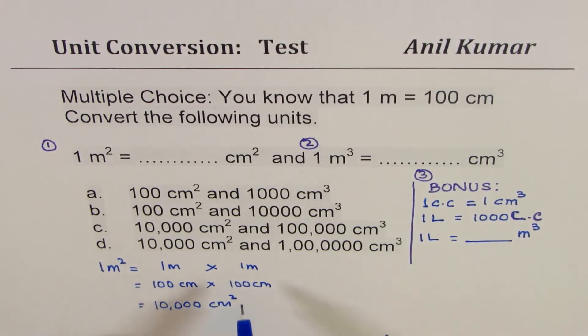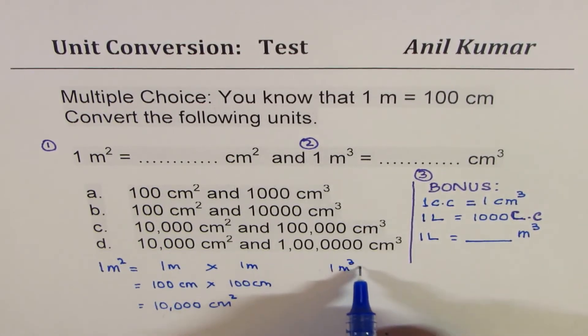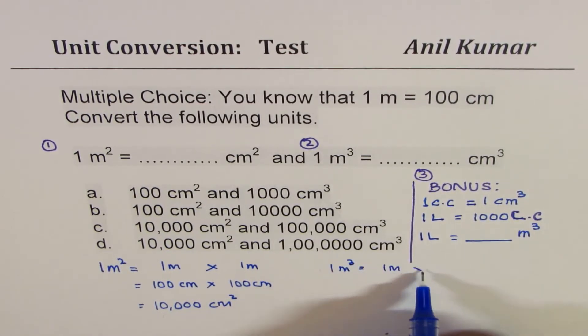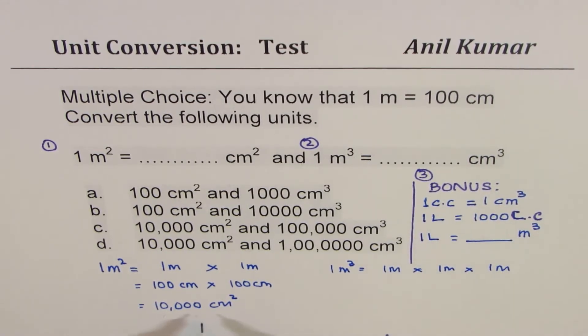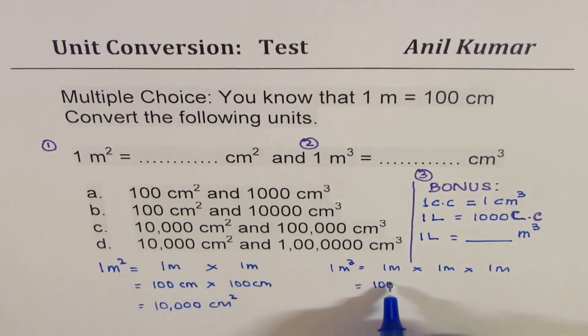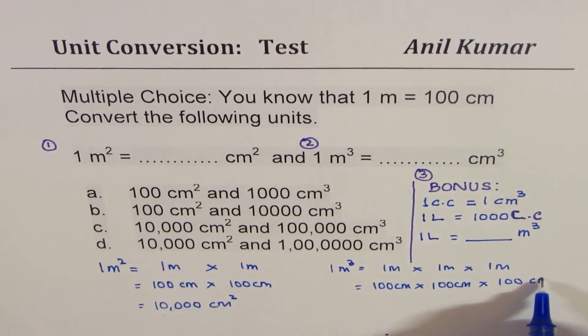Now let's do the same for meter cube. One meter cube means one meter times one meter times one meter. You could do one meter square times meter also, but let me repeat this process. It means 100 centimeter times 100 centimeter times 100 centimeters.